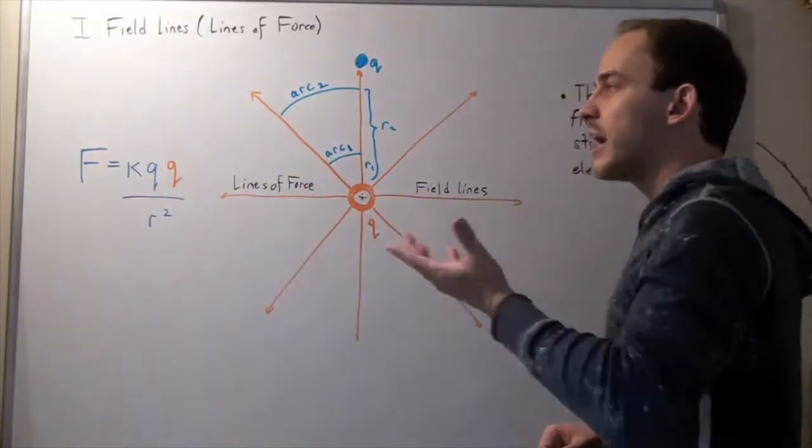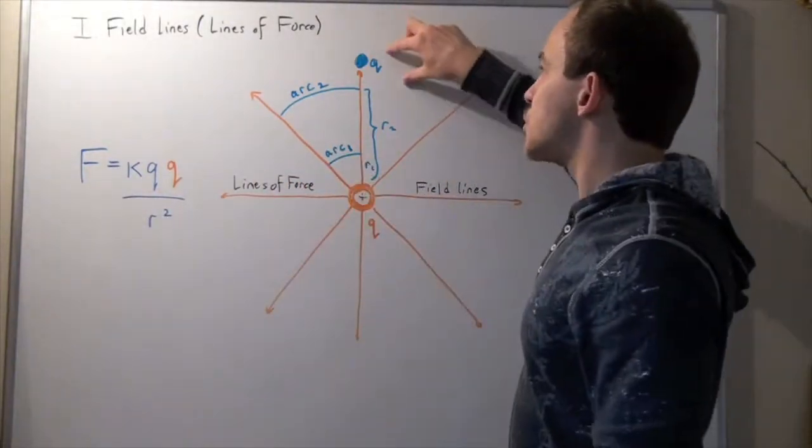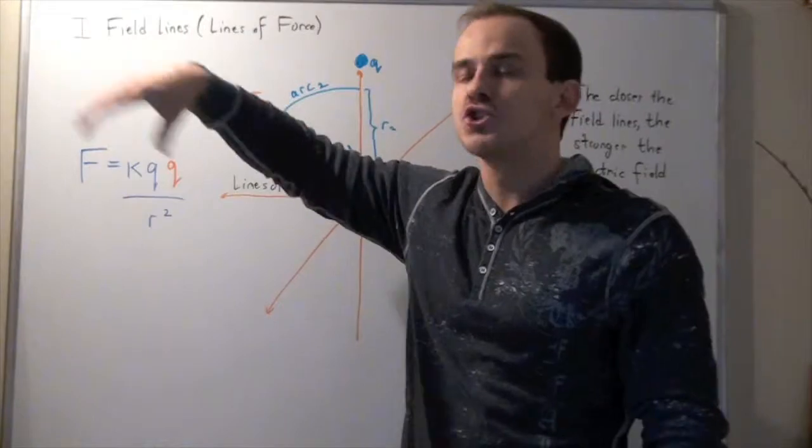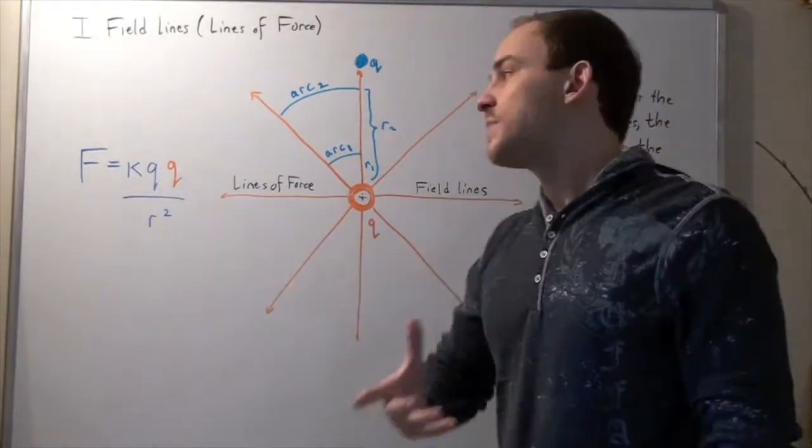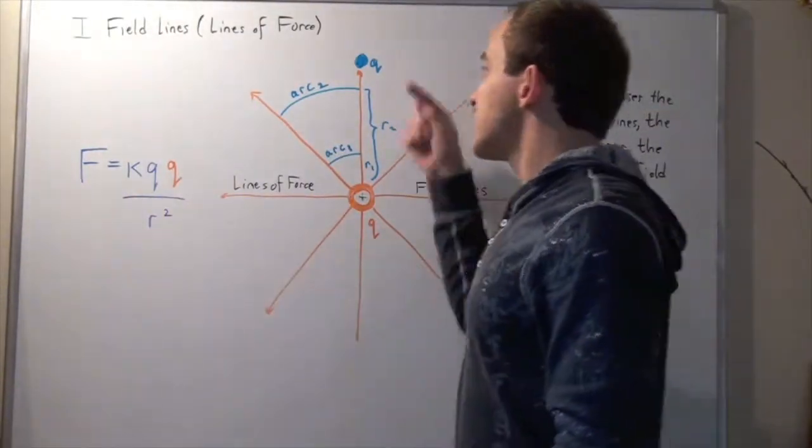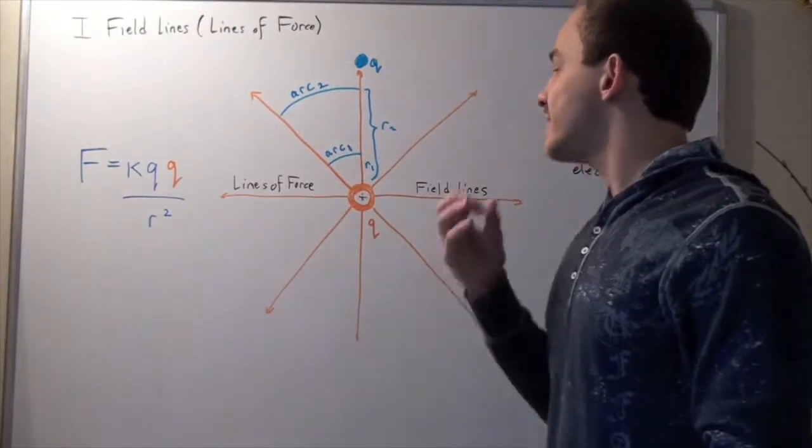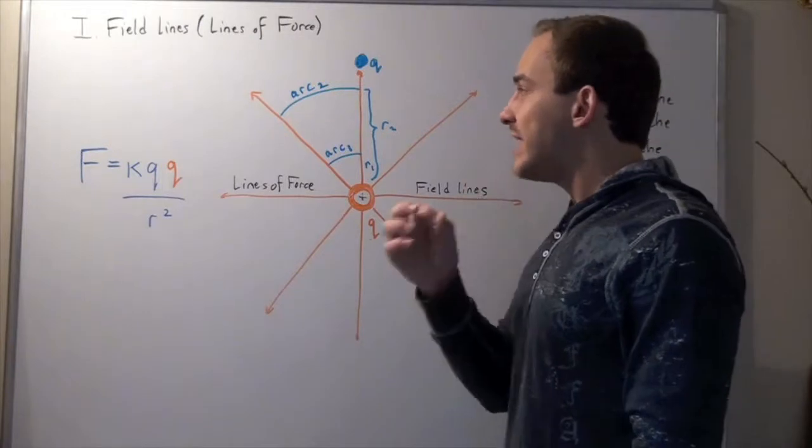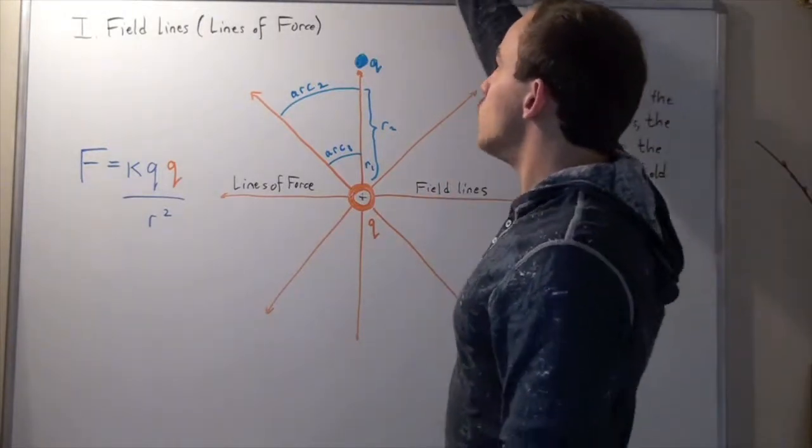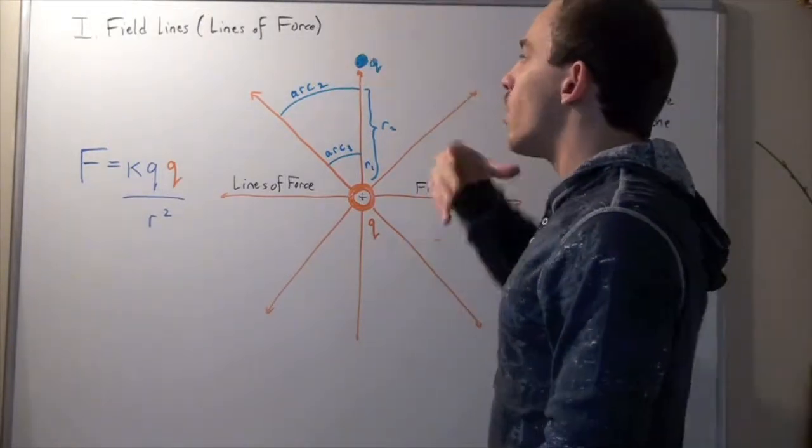And I said in another lecture that if you move this charge to the edge of the universe, we can assume that's a distance of infinity. And so the force that this guy would feel at the edge of our universe can be approximated to zero. Now, my question is, when we start moving back our charge, what happens?